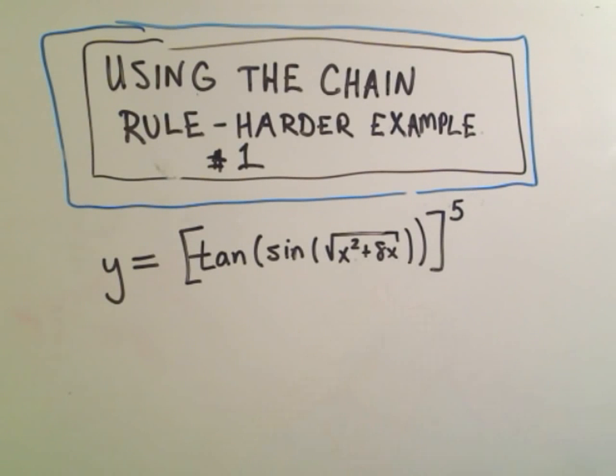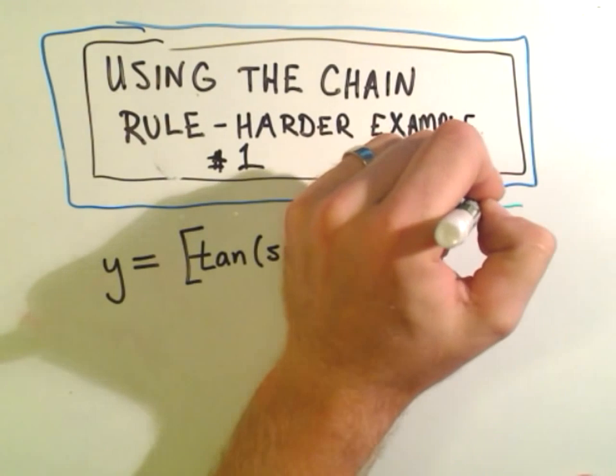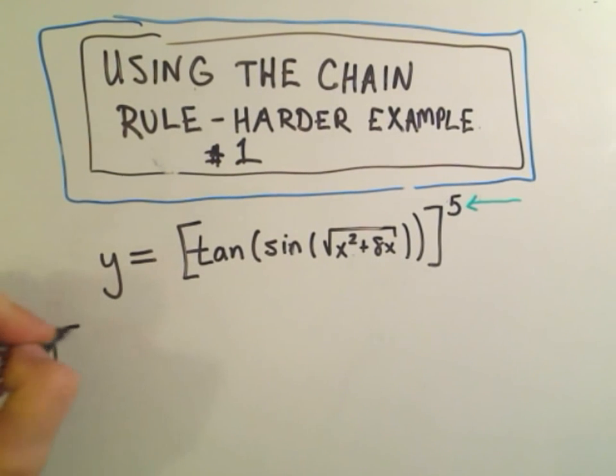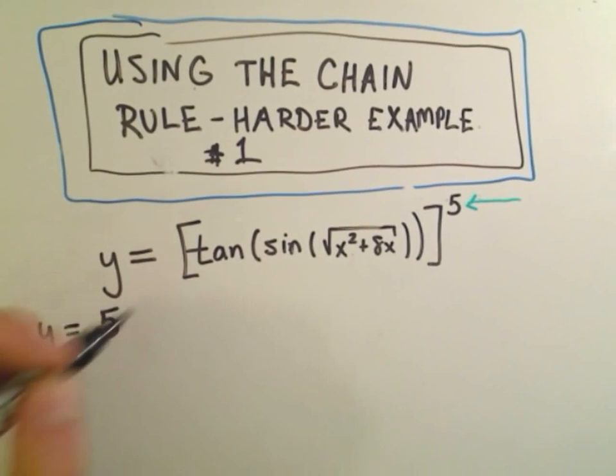So again, notice there's no multiplication in here, it's all a composition, so we've got to use the chain rule a bunch of times. I think about it as the outside-inside rule, so if I had something raised to the fifth power, the first thing I would get would be, well the five would come out front.